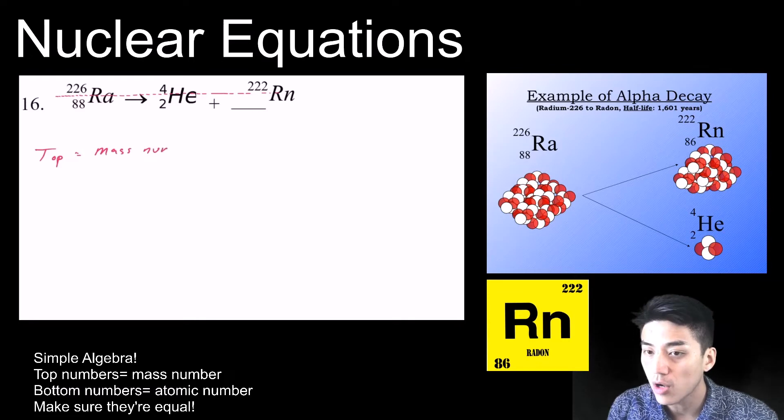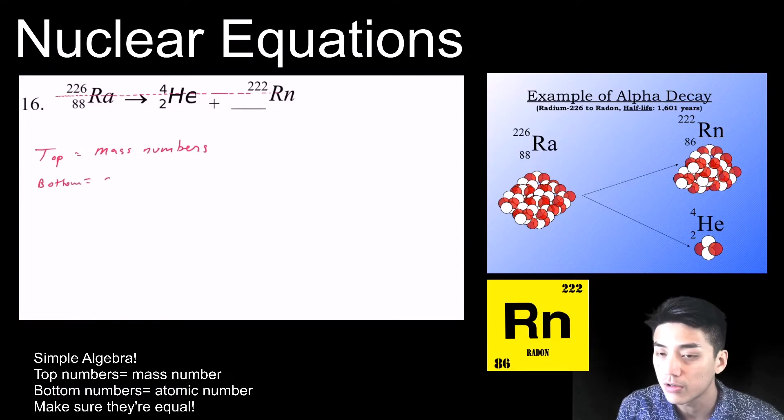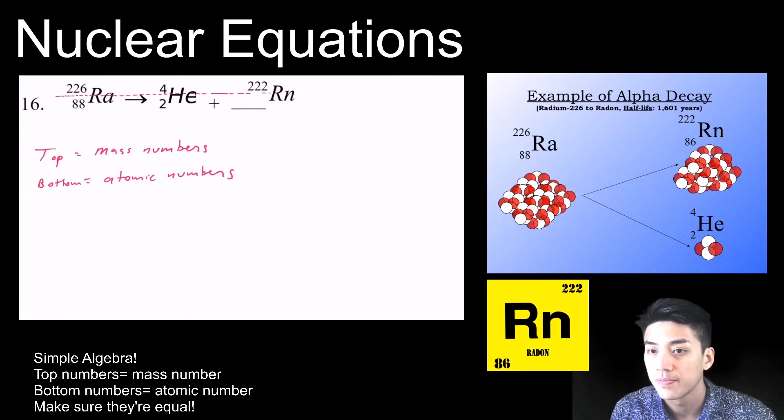So how I do these problems is I separate the top numbers from the bottom numbers. So I draw a dotted line going across. So the top numbers are your mass numbers, and the bottom numbers are the atomic numbers, which are the number of protons. So you can see there how 4 plus 2 into 22 equals 2 into 26.